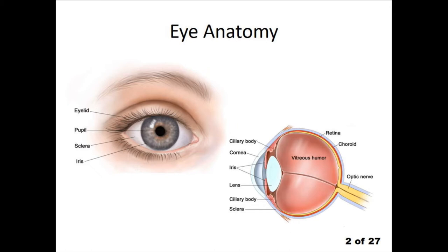You also have the conjunctiva, which is the mucous membrane that lines the inner lid as well as the sclera. Then you have the ciliary body, which takes care of accommodation — your lens shape — as well as aqueous humor production and resorption.